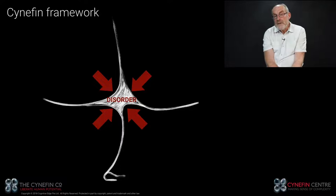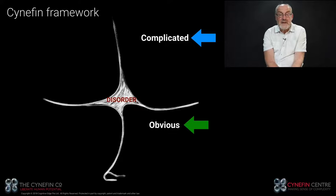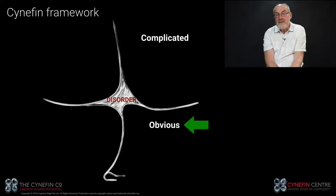Order divides into two: obvious and complicated. In ordered systems, there is a linear relationship between cause and effect — the same thing will happen again the same way, not by accident but by the nature of the system. In the obvious domain, everybody can see the relationship and nobody disputes it. For example, in the United Kingdom we drive on the left-hand side of the road, in the United States on the right. There are historical reasons, but nobody disputes it. The UK falls into the category of countries that drive on the left, so you change your behaviour accordingly.